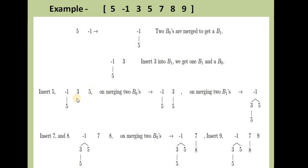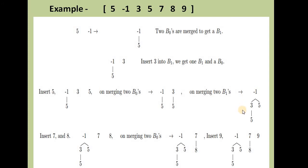We then insert 5 as another B0. We now have one B1 and two B0s. We merge the two B0s first — 3 is the smaller root — forming a new B1 with 3 and 5. We then join the two B1s to construct a new B2, where the smaller element becomes the root. Next, we insert 7 as a B0.